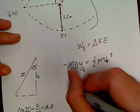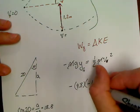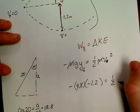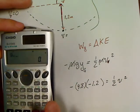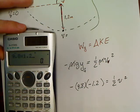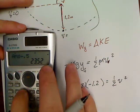Negative 9.8 times Tarzan fell 1.2 meters equals one half v squared. So Tarzan, 9.8 times 1.2, the negatives cancel, divide by half, take the square root.